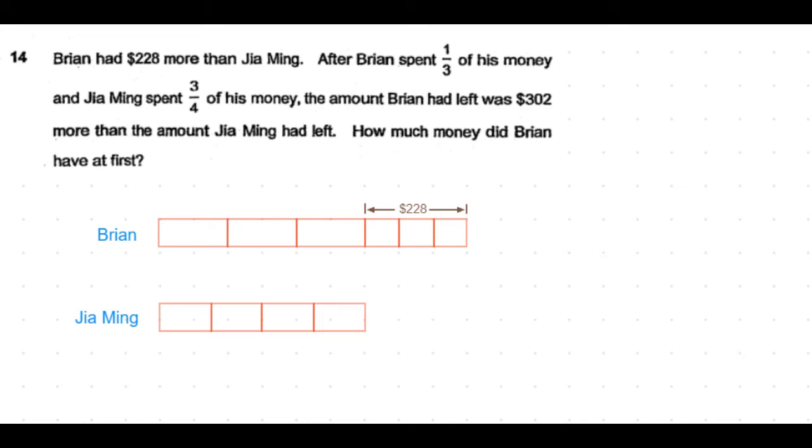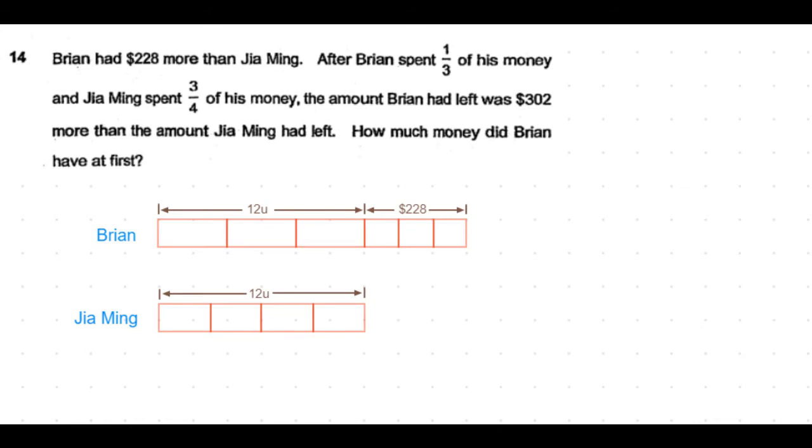Brian's money should be divisible by 3 and Jia Ming's money should be divisible by 4, so the common multiple of 3 and 4 is 12. So let's call this section 12 units.